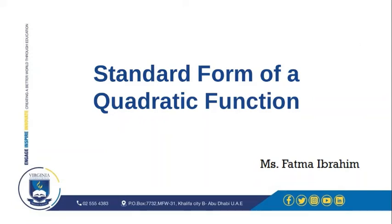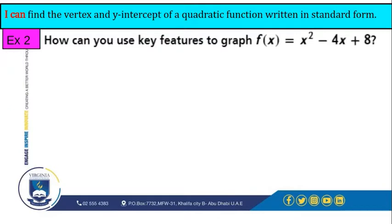Standard Form of a Quadratic Function. I can find the vertex and y-intercept of a quadratic function written in standard form. How can you use key features to graph f(x) = x² - 4x + 8?